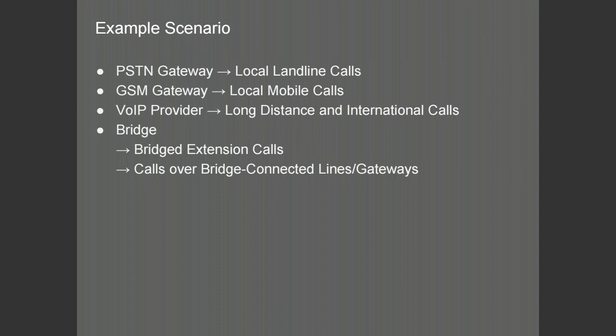An example scenario would be the following: use a PSTN gateway to process local landline calls, as the local telco may provide cheaper calls to local networks. Use a GSM gateway to make calls to local mobile numbers — you may have SIM cards from a local mobile provider with unlimited calls. A VoIP provider may be used for long distance and international calls. A bridge may be used to call extensions on a remote PBX or use any resources connected to that PBX, such as gateways or VoIP providers.